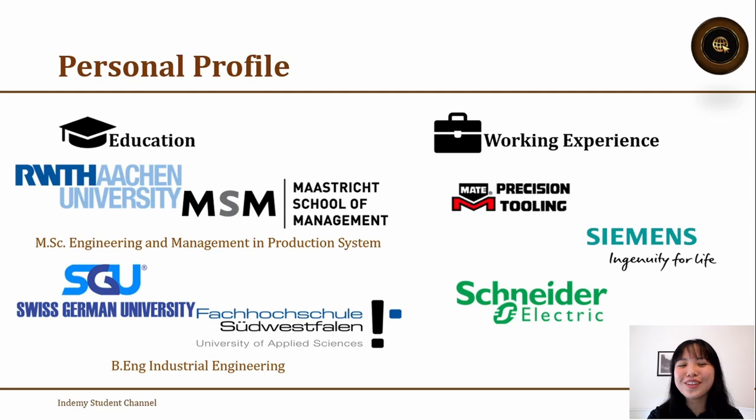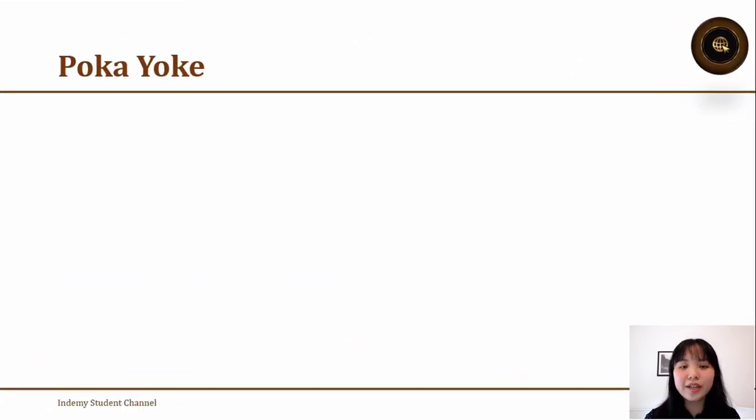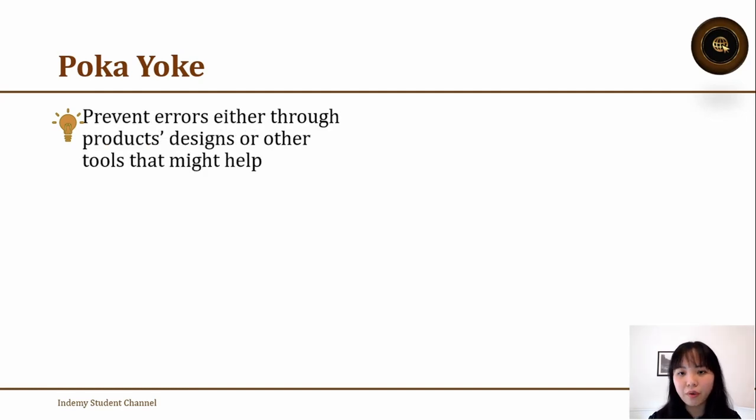The first one we want to learn about is Poka Yoke. Is it familiar to you? Poka Yoke itself has various definitions, but the idea of Poka Yoke is to prevent errors through product designs or other tools that might help with error prevention. For example, in daily life we find it in the SIM card for your phone.